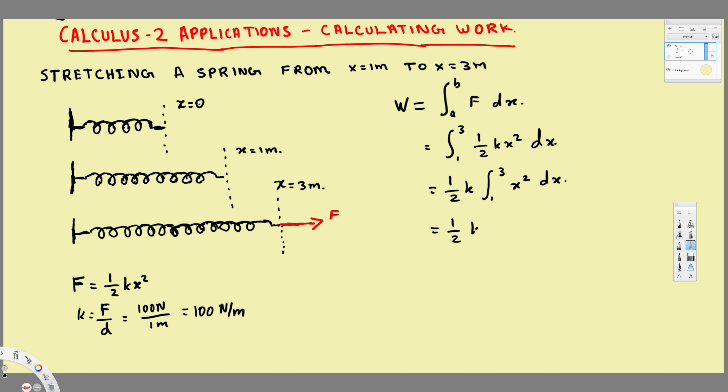Let's do the integration. This is going to be ½k times x³ divided by 3, evaluated from one to three. Let's substitute the values and see what we get. We can move this 3 to the front since it's a constant, so this is going to be 1/6 k, and then 3³.